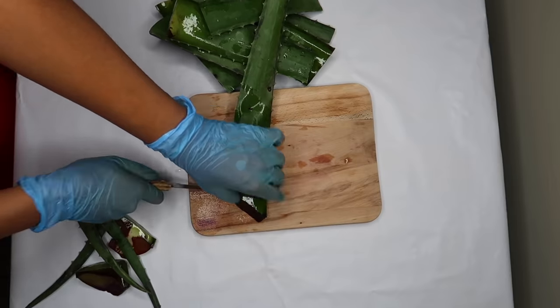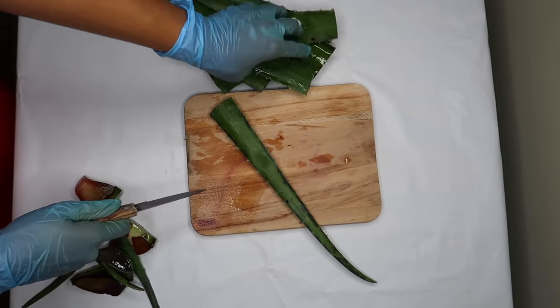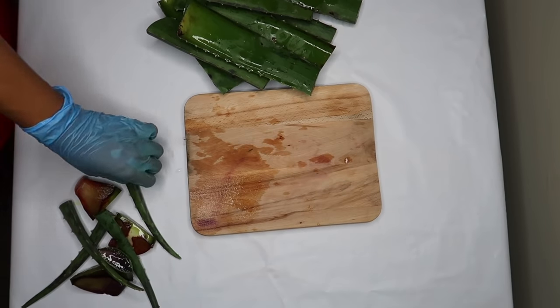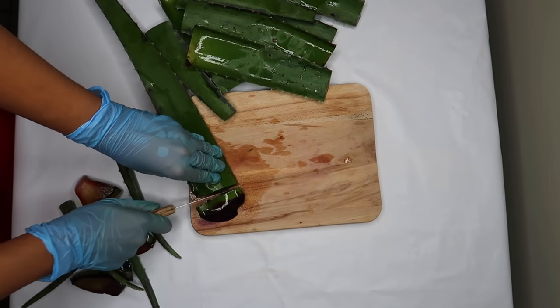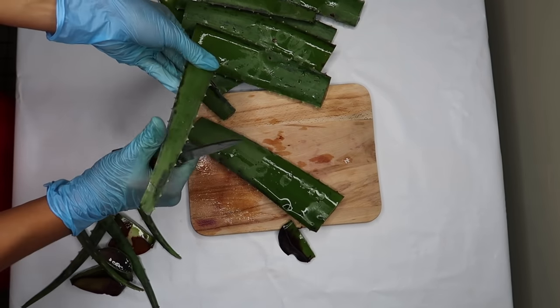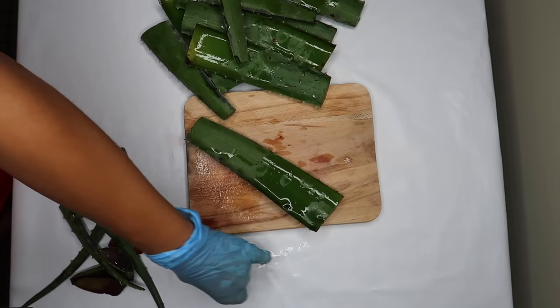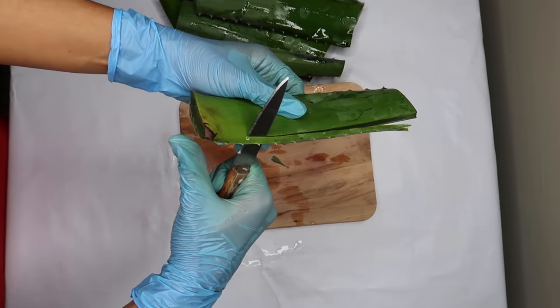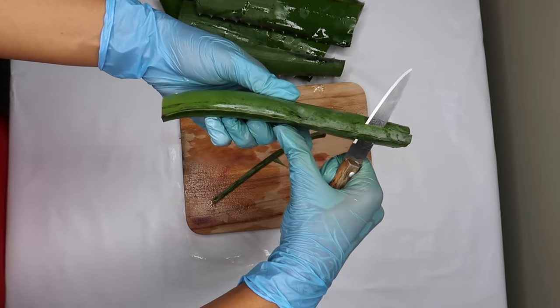Aloe vera was used for centuries for its health and beauty benefits in Egypt, India, Mexico, Japan and China. In ancient Egypt, formerly known as Kemet, aloe vera was called the plant of immortality.